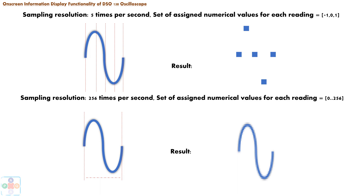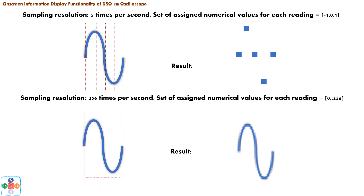The number of sample readings taken in a time interval of one second is called sampling resolution. Alongside the number of readings taken per second, the next important thing about signal sampling is the set of numerical values individually assigned to each reading. The larger the set, the more accurate and reliable the sampling is.